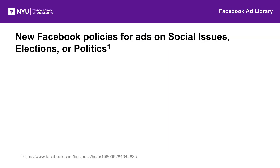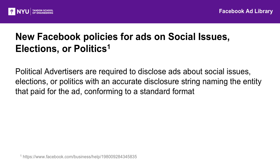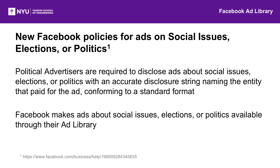Because of all this, in the summer of 2018, Facebook implemented new policies around political advertising. In the United States, advertisers are required to disclose ads about social issues, elections, or politics, and they must provide an accurate disclosure string naming the entity that paid for the ad, conforming to a standard format. Facebook makes ads on those topics transparent through its ad library, with an overall aim to have enough transparency that third-party groups can act, and users aren't misled about who is paying to show them ads.